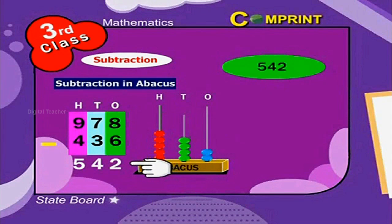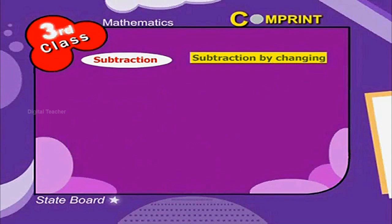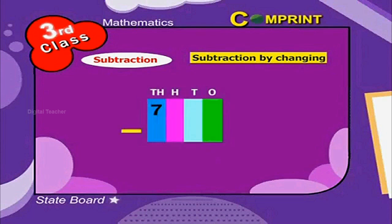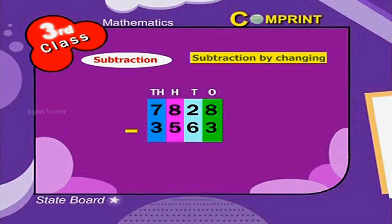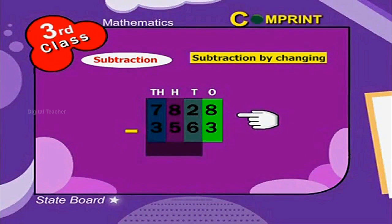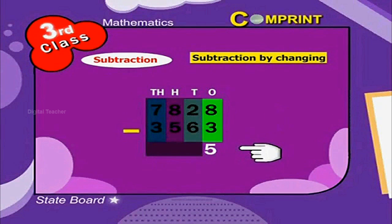Subtraction by changing. Here is an example for us. 7,828 minus 3,563. Step 1: Subtract 1's place. That is, 8 minus 3 is equal to 5.